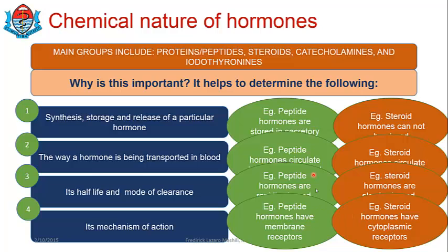Later on we will see why we have all these differences, and then it will be easy to understand why it is important to clearly understand the chemical nature of different hormones. This also helps you group them, and once you know the characteristics of a particular group, you can tell a lot about individual hormones in that group — so instead of memorizing each hormone individually, you just need to master the characteristics of each group.